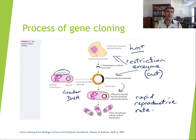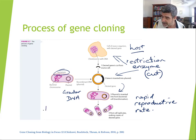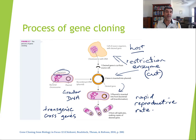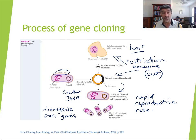Any process where we introduce a gene from one organism to a different species is called transgenics — cross genes, if you like, genes that have crossed from one species to another. We're cutting them out of one organism and sticking them into another. Transgenics and genetically modified organisms have been produced in this same way.